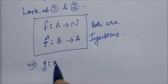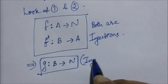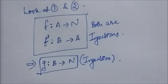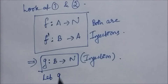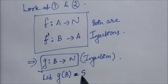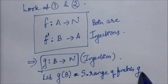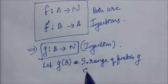This implies that there is an injection from set B to set ℕ. Let g be the injection function from set B to the set of natural numbers. Let g(B) be the set S, where g(B) denotes the range of the function g. So let that range of the function g be the set S.